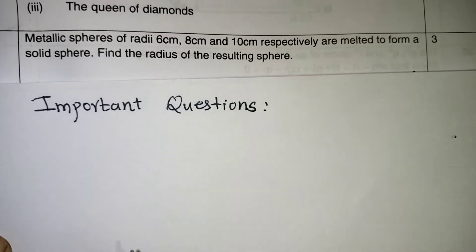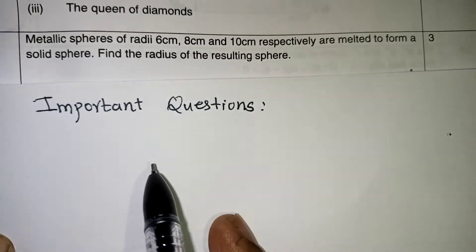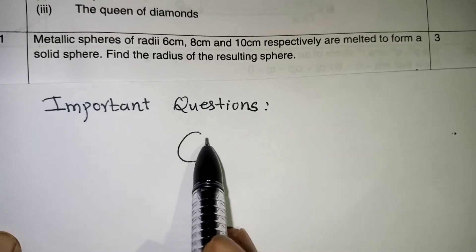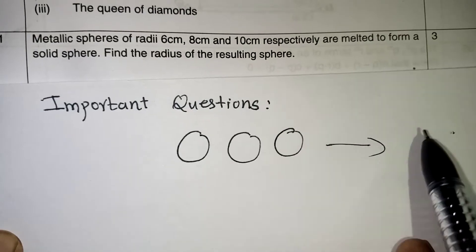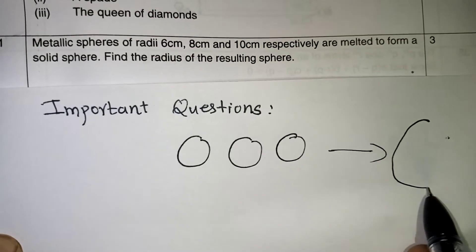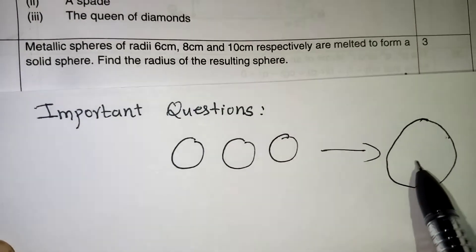So they mean that they are just melting 3 spheres, they are recast into one single sphere. We need to find the radius of the new resulting big sphere. That is the question.